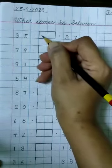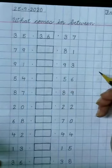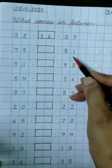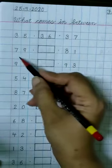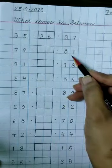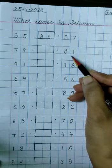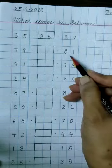So write 3, 6, 36 in this box. Next numbers are 79 and 81. What comes in between 79 and 81? 79, 80, 81. 80 comes in between 79 and 81.